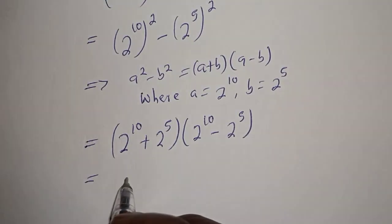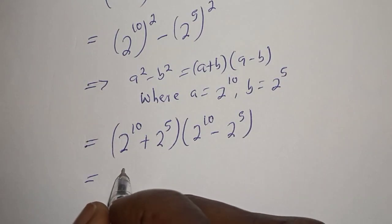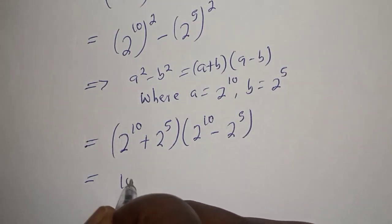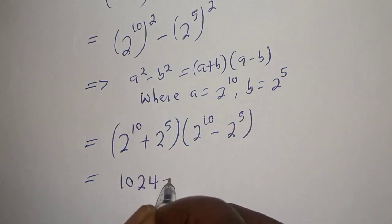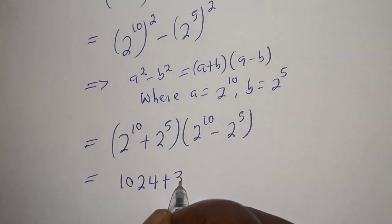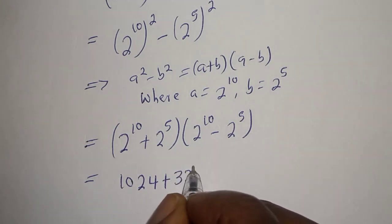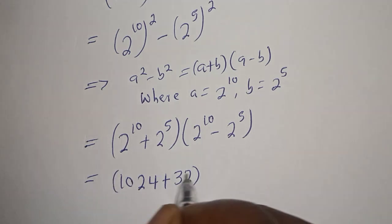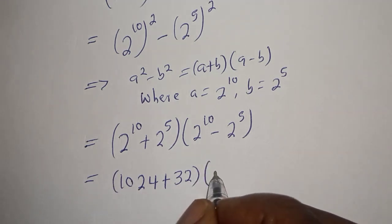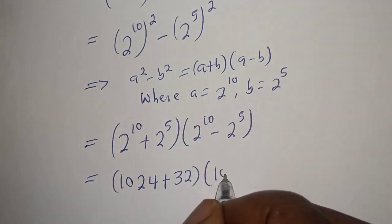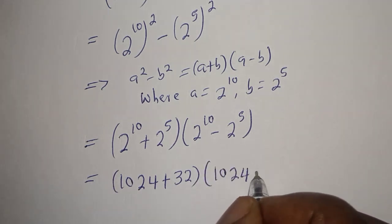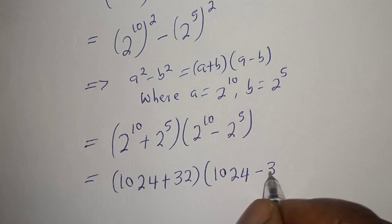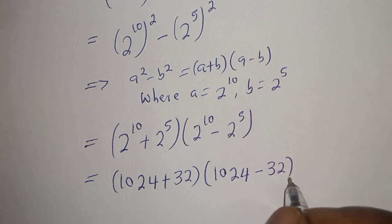Now substituting the values: 2 raised to power 10 is 1024, and 2 raised to power 5 is 32. So we have (1024 plus 32) multiplied by (1024 minus 32).